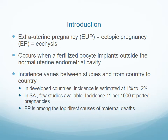Extrauterine pregnancy is the same as an ectopic pregnancy. It occurs when a fertilised oocyte implants outside the normal uterine endometrial cavity. The incidence varies between studies and from country to country. In developed countries, it has been reported to be around 1% of the population.